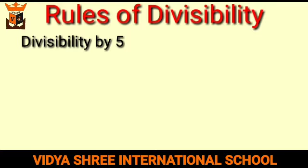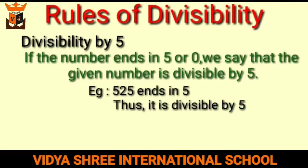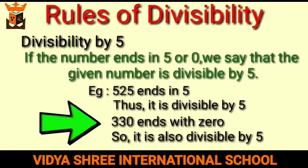Divisibility by 5: if the number ends in 5 or 0, we say that the given number is divisible by 5. For example, 525 ends in 5, thus it is divisible by 5. And the number 330 ends with 0, so it is also divisible by 5.